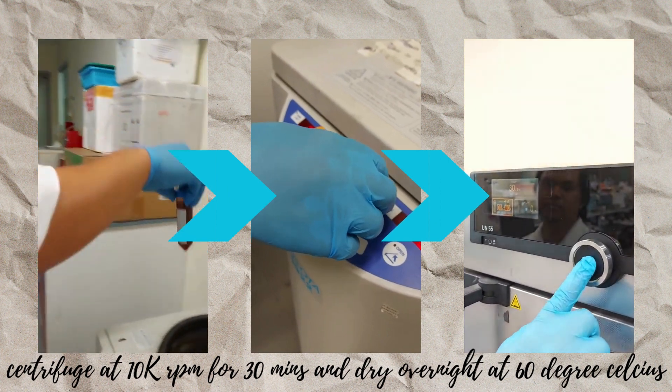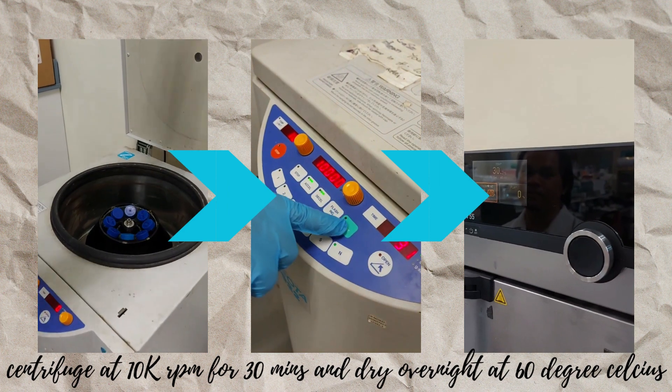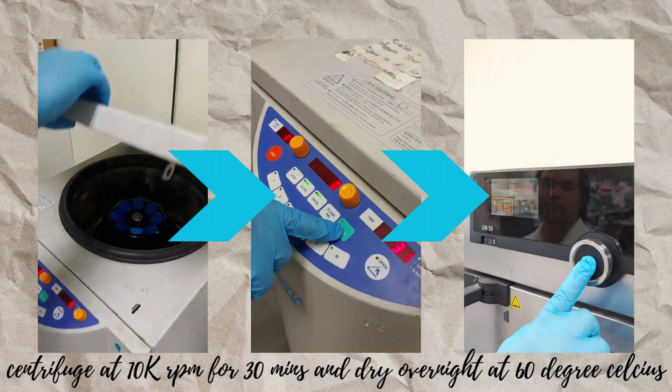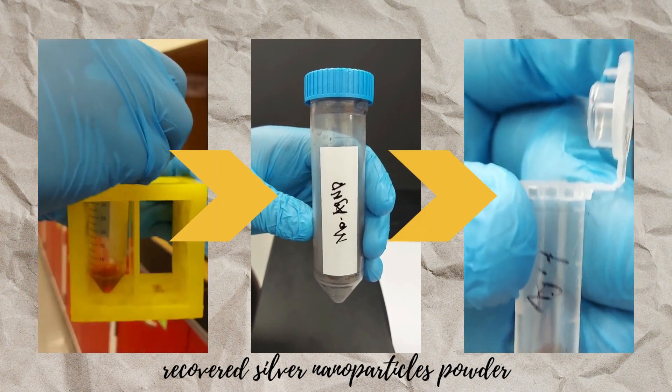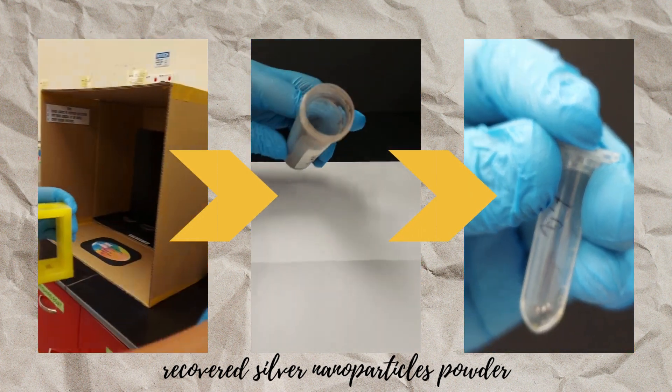Centrifuge the colloids at 10,000 rpm for 30 minutes. Later, discard the supernatant and keep the pellet. Wash the pellets with water if necessary. Finally, dry the pellet in an oven overnight at 60 degrees celsius.